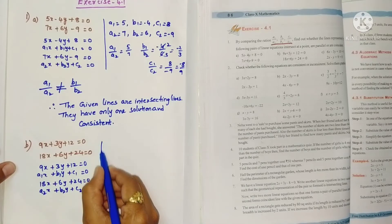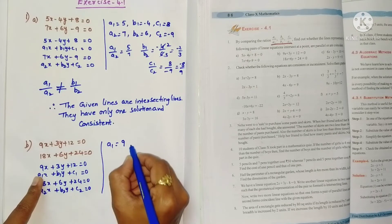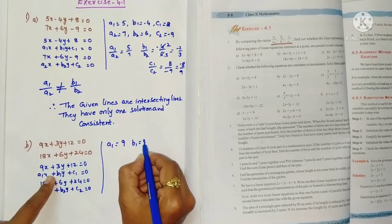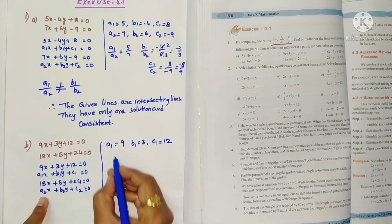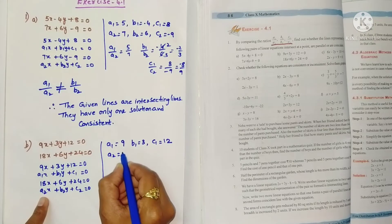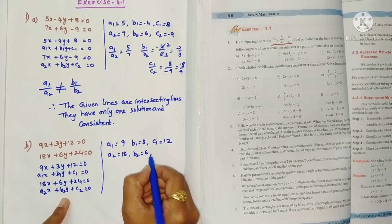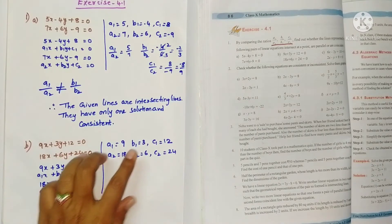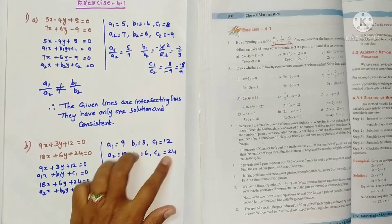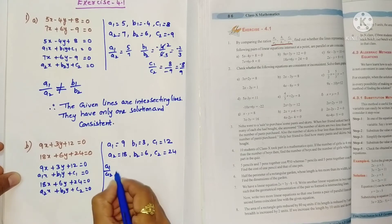So write a1 equals 9, b1 equals 3, c1 equals 12. And here a2 equals 18, b2 is 6, c2 is 24. 9 times 2 is 18, 3 times 2 is 6, 12 times 2 is 24. That means all the ratios are equal.